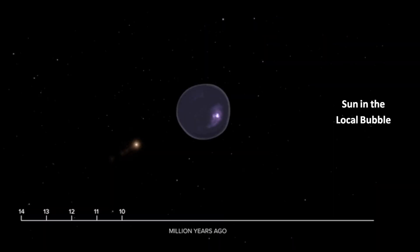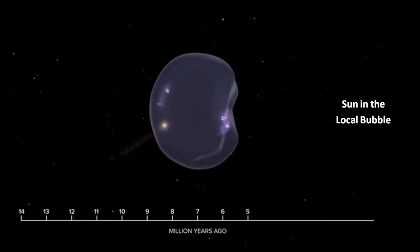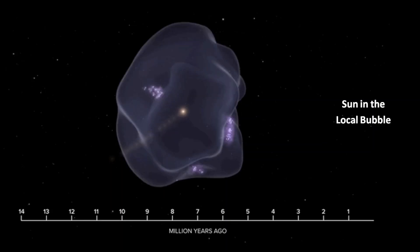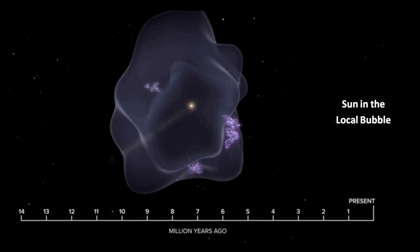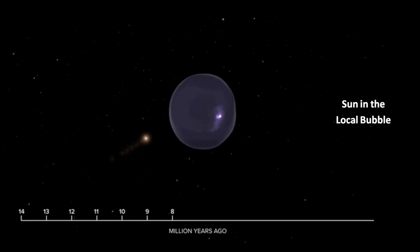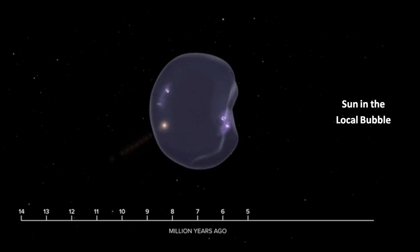One of 800 million stars in the Orion Arm is the Sun, located in the local bubble 26,000 light years from the galactic center. The Sun entered the local bubble 5 million years ago and will exit the bubble in about 8 million years.